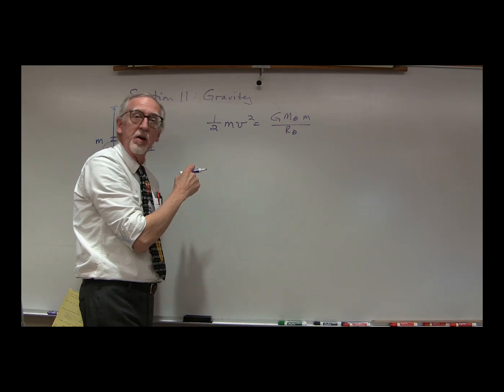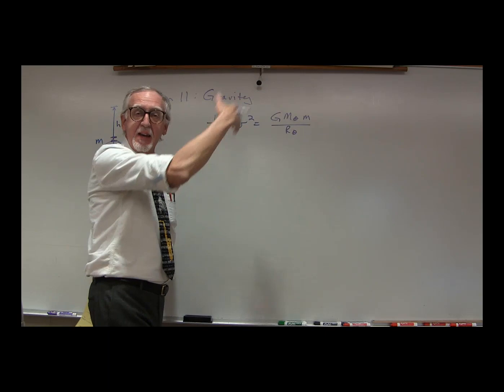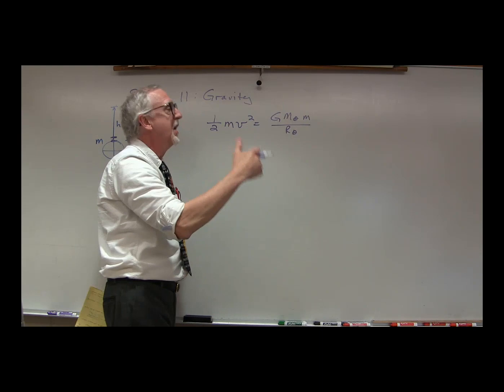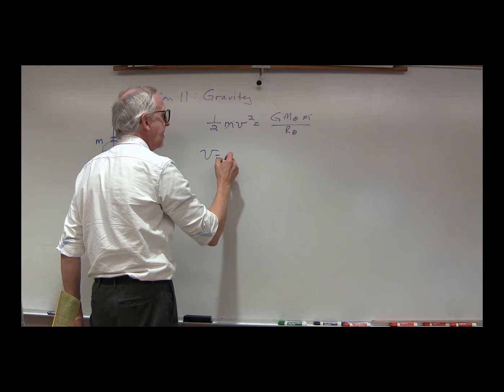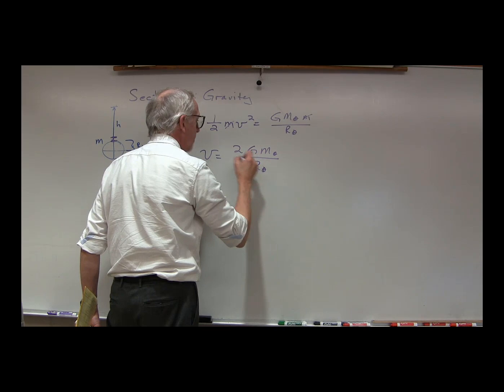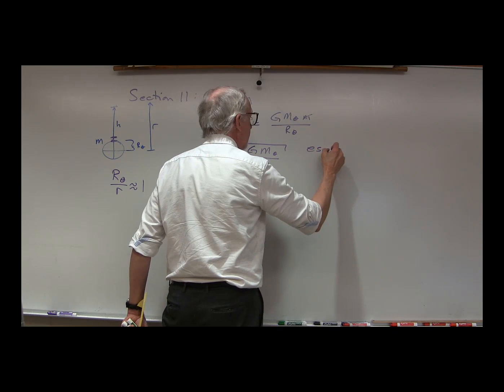Setting the kinetic energy, one-half mv squared, equal to the necessary energy to escape the gravitational field — essentially to be able to get infinitely far away. Gravity just gets weaker and weaker, but to be able to make it to infinity, so to speak: G times mass of Earth times mass of the object, over radius of the Earth. We can divide off the mass of the object, multiply by 2, take the square root, and we have v equals the square root of 2G times mass of the Earth over radius of the Earth. This quantity is called the escape velocity.